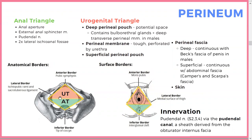The perineum is divided into the urogenital triangle — superior when the person is lying down — and the anal triangle, which is inferior. The anal triangle includes the anal aperture, external anal sphincter muscles, the pudendal nerve, and the lateral ischiorectal fossa. The urogenital triangle contains the deep perineal pouch, perineal membrane, superficial perineal pouch, and perineal fascia.